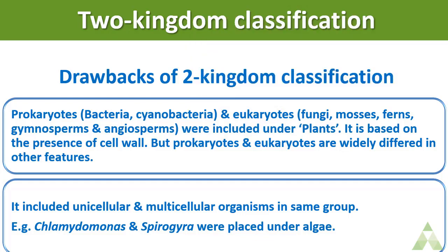In the two-kingdom classification, prokaryotes, eukaryotes, and the plants we see — herbs, shrubs — were all included in kingdom Plantae. The presence or absence of cell wall was the main criteria. Since plant cells have a rigid cell wall, all of them were included in Plantae. But this was not right, because prokaryotes like bacteria and cyanobacteria, and eukaryotes like fungi and mosses, needed specific classification — proving to be a major drawback.